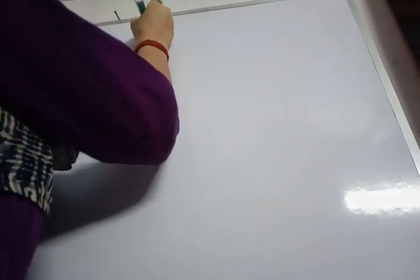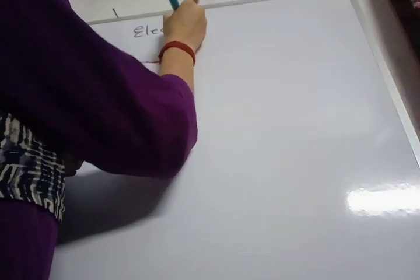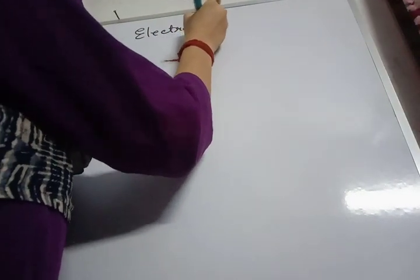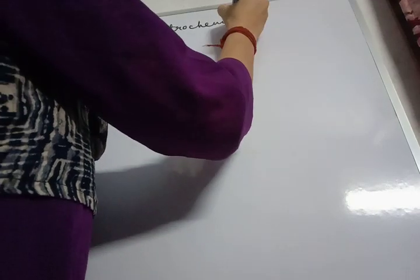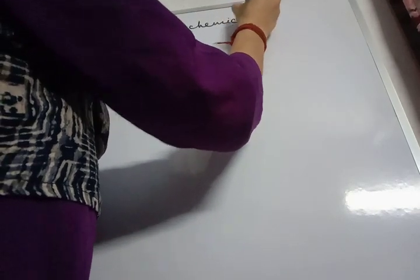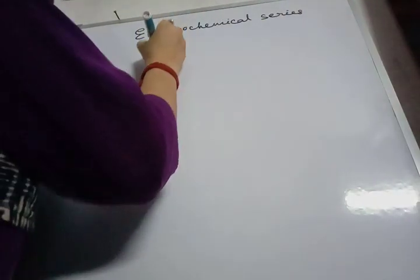Good evening. We are going to talk about the electrochemical series of metals. The electrochemical series is an arrangement of the metals in decreasing order of their tendency to lose electrons.